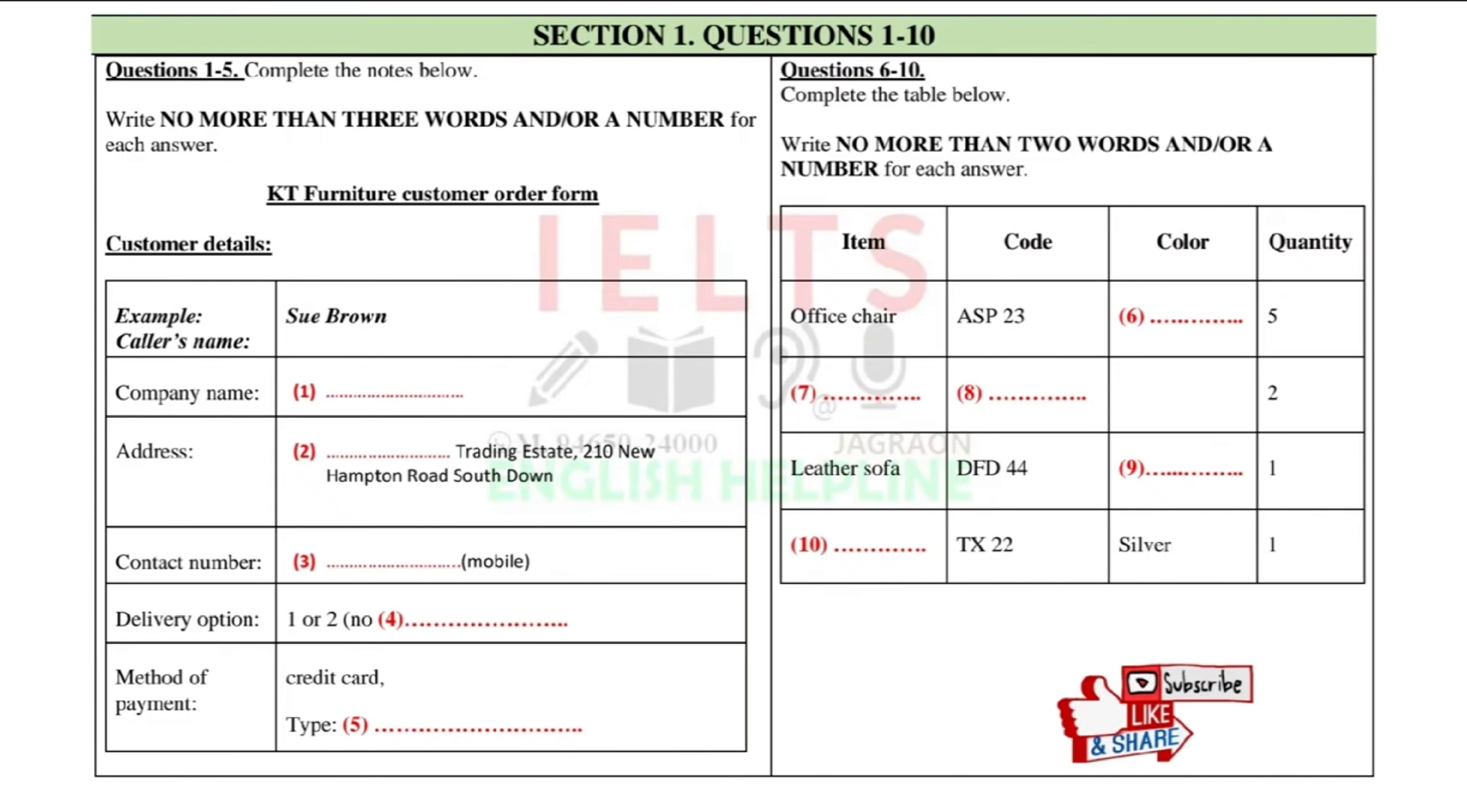For a woman talking on the phone to a furniture company, first you have some time to look at questions one to five. Now we shall begin. You should answer the questions as you listen because you will not hear the recording a second time. Listen carefully and answer questions one to five.